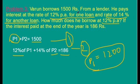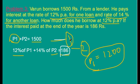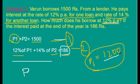See this problem. Varoon borrows 1500 rupees from a lender. He pays interest at the rate of 12% per annum for one loan and 14% for another loan. The actual principal is divided into two parts: P1 + P2 = 1500. The total interest paid at the end of the year is 186 rupees. By solving these two equations, we get P1. He borrows 1200 rupees at 12% per annum.